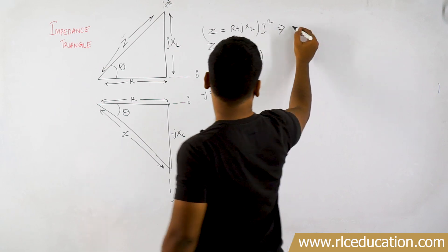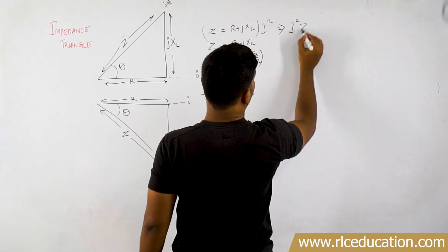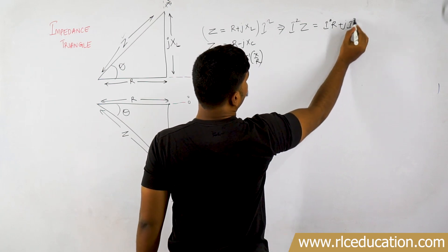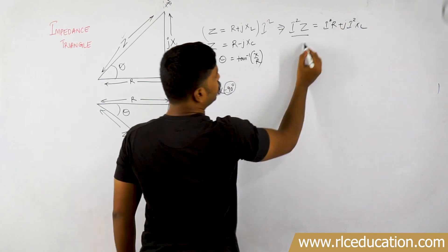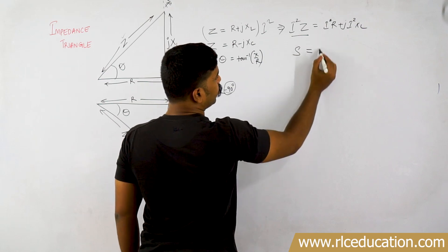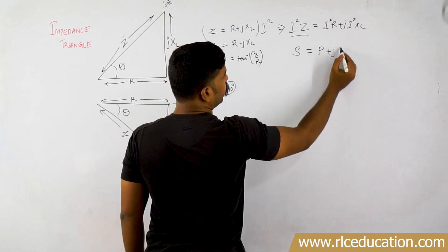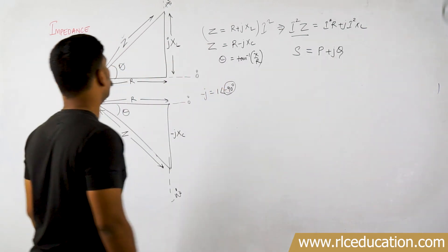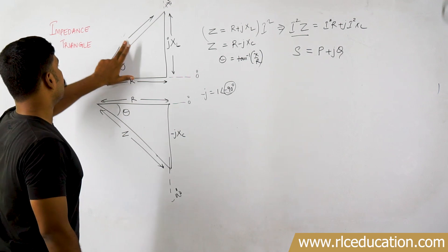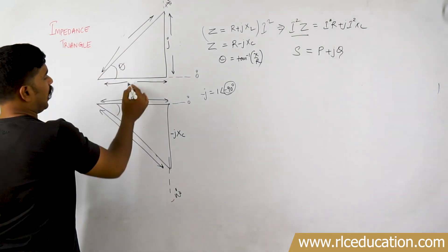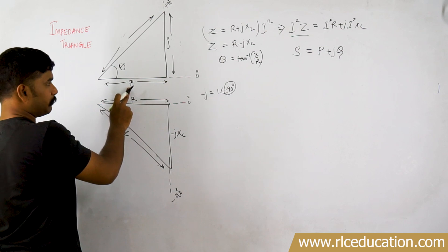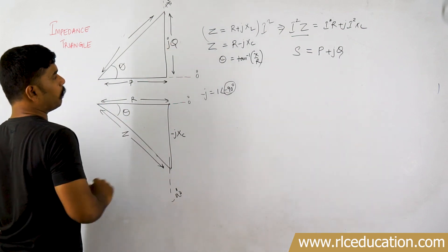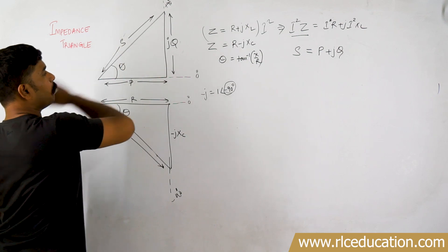After multiplying by I squared, I get I squared into Z, plus I squared into R, plus J I squared into XL. I squared into Z is apparent power; I squared into R is active power; and J I squared into XL is reactive power consumed by the inductor. So R becomes P — the power consumed by the resistor — power consumed by the reactor is reactive power, and the total power is the apparent power S.